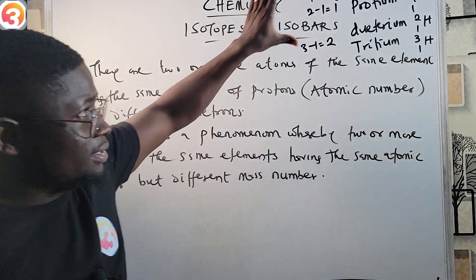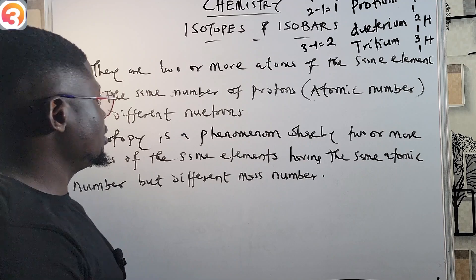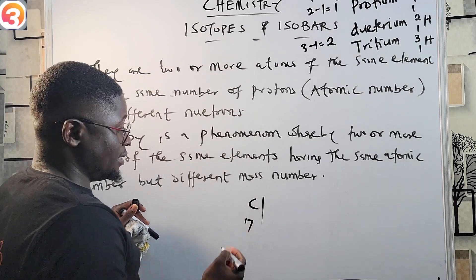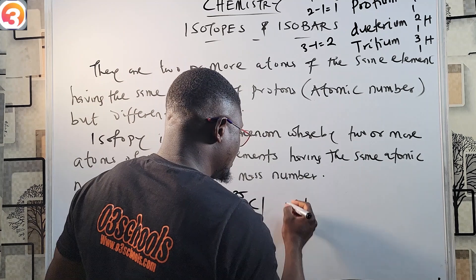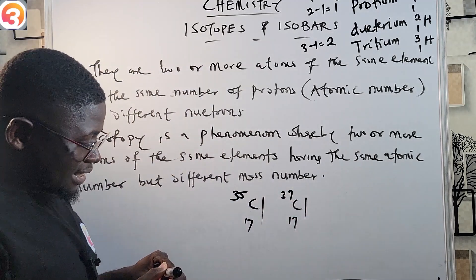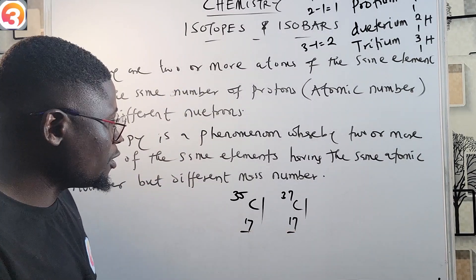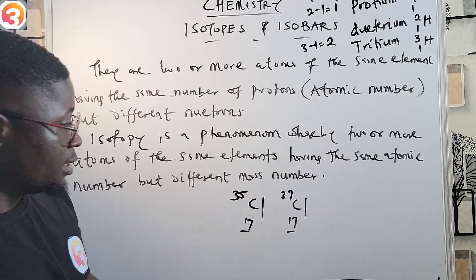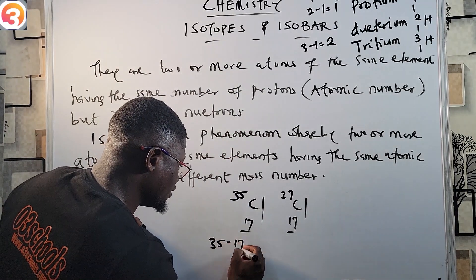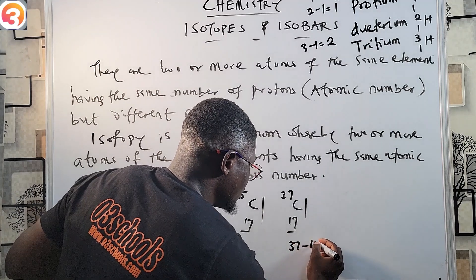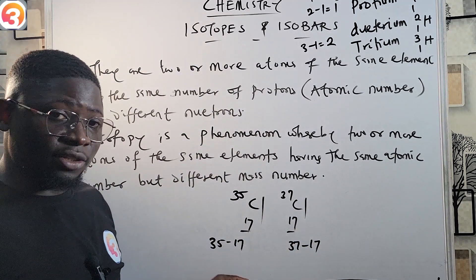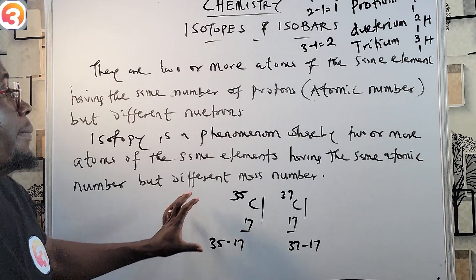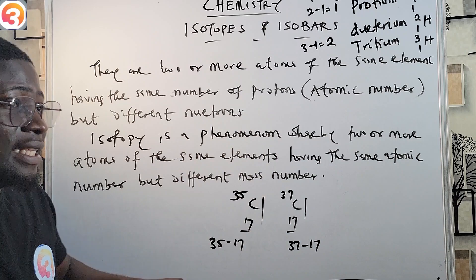Isotopy is satisfied here because all three have one proton — the same atomic number — but different neutron counts: protium has 0, deuterium has 1, and tritium has 2 neutrons. Another example is chlorine: chlorine-35 with atomic number 17, and chlorine-37 with atomic number 17. They have the same number of protons but different mass numbers.